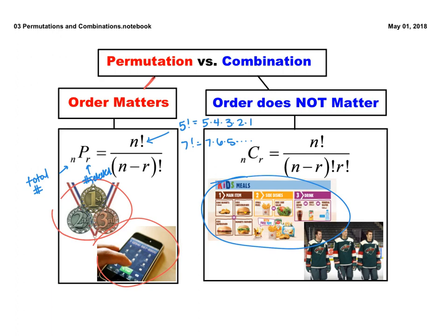When setting up the permutation formula, you put the total number factorial on top, and then N minus R factorial in the bottom. You're going to have a lot of things that cancel when you go through this. The combination formula is pretty much the same thing, except it has an additional R factorial in the denominator that doesn't exist in the permutation formula. That's going to change the number of outcomes the situation could have.